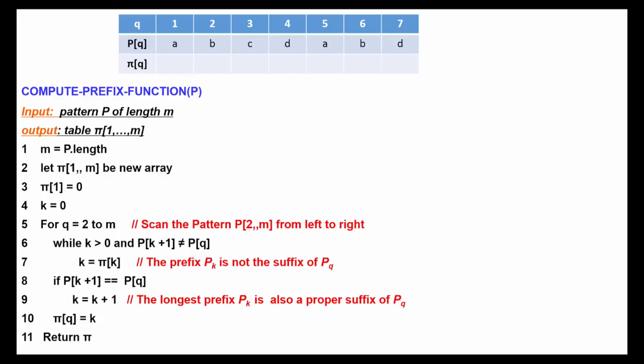When a mismatch is detected, we will already know some of the characters in the pattern have been matched. We take advantage of this information to avoid matching the characters we know already matched during the searching phase.